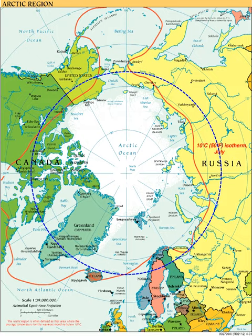The North American Arctic comprises the northern portions of Alaska USA, northern Canada, and Greenland. Major bodies of water include the Arctic Ocean, Hudson Bay, the Gulf of Alaska, and the North Atlantic Ocean.